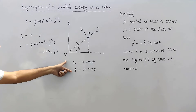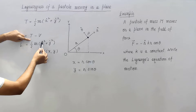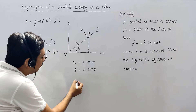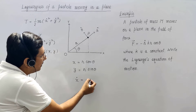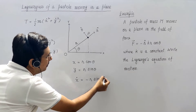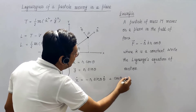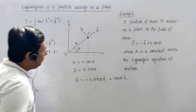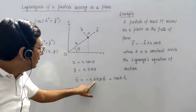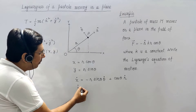Now we want to write down the Lagrangian for this particle in polar coordinates. The Lagrangian is 1/2 m (x-dot squared plus y-dot squared), so we need x-dot. Differentiating x = r cos(theta) with respect to time: x-dot = -r sin(theta) theta-dot plus r-dot cos(theta).